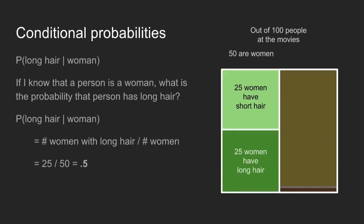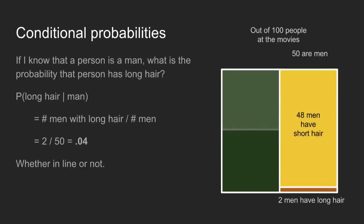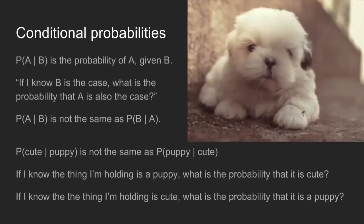If you bear with me for just three probability concepts, we'll lay the foundation for presenting Bayes' theorem. The first one is conditional probabilities. If I know that a person is a woman — that's the condition — what's the probability that that person has long hair? It's written as: probability of long hair given that a person is a woman. To get this, we just divide the number of women with long hair by the total number of women: 50%. And this doesn't change whether there's 50 women in your group or two women in the group. If we know that a person is a woman, the probability that they have long hair is 50%. We can do the same thing with men: the probability that someone has long hair given that they're a man is 4%.